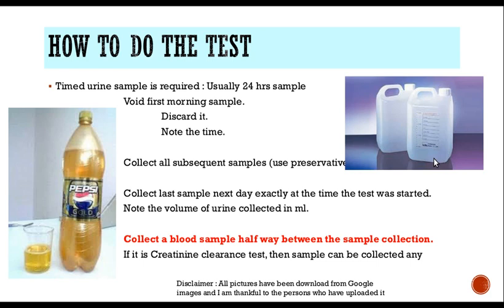How do we do the test? We need a timed urine sample — usually a 24-hour urine sample is collected. How do we advise the patient? We tell the patient that at 8 o'clock, void out whatever urine is present and discard it. After that, note the time and then start collecting the sample. All the samples of urine throughout the day should be collected. We use a preservative to prevent bacterial contamination.